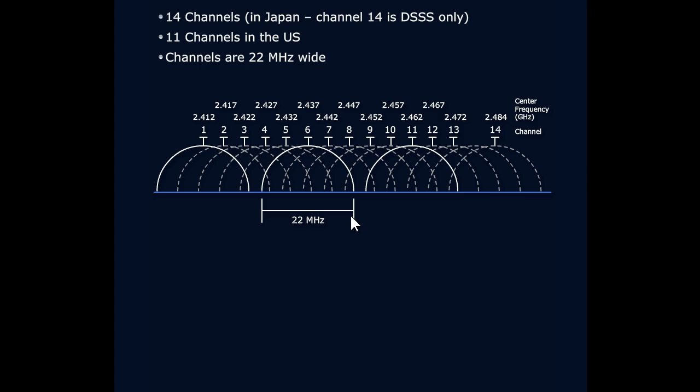Why 22 megahertz? Well, remember the baseline of how DSSS communicates is based upon that 22 megahertz channel that is defined by 11 individual subchannels, if you will, that are 2 megahertz wide.